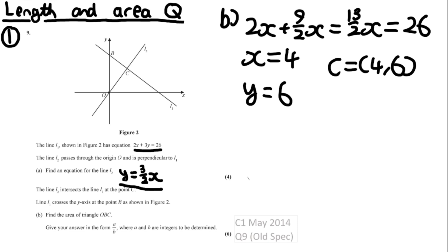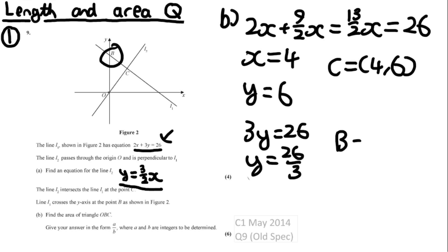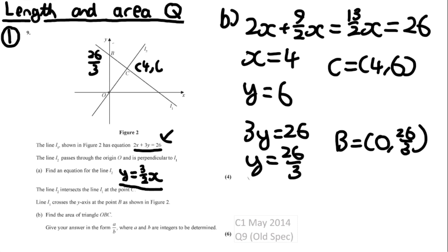To find B, where L1 crosses the y-axis, set x equal to 0 in 2x plus 3y equals 26: 3y equals 26, so y equals 26/3. Therefore B is (0, 26/3). Annotating the graph: B is at y-intercept 26/3 and C is at (4, 6). The base along the y-axis from O to B is 26/3, and the height from the y-axis to C is 4. So the area is half times 26/3 times 4, which equals 52/3.